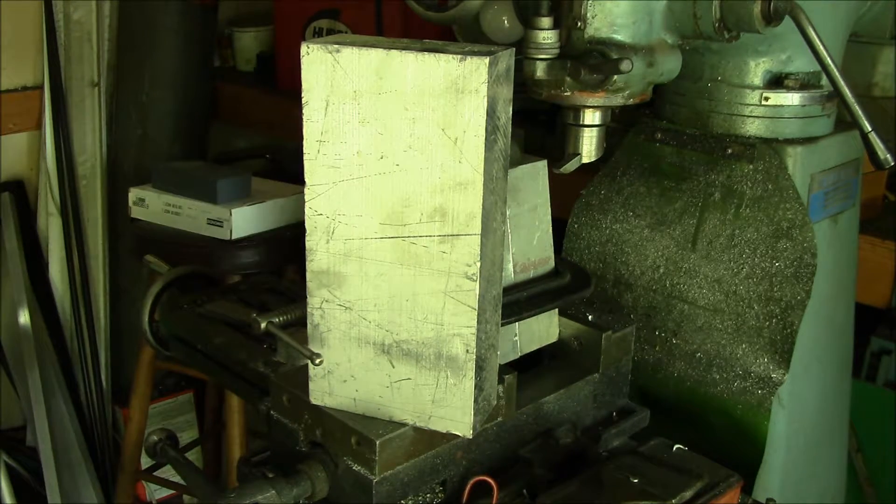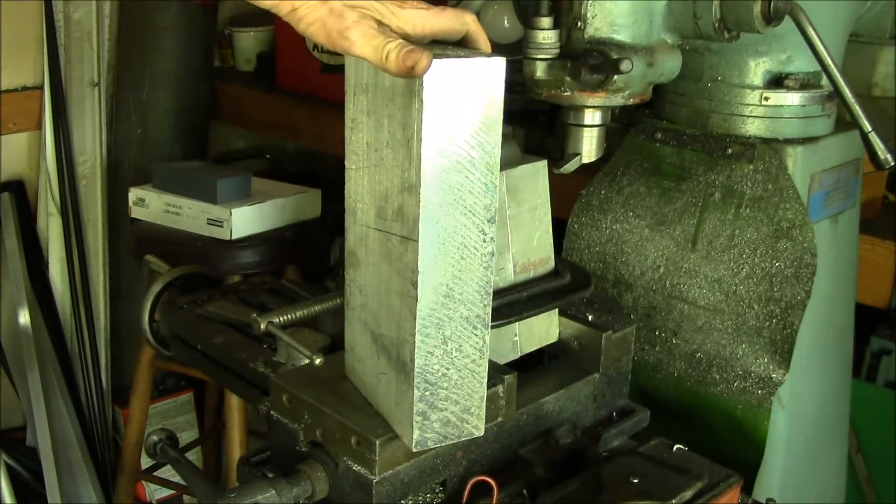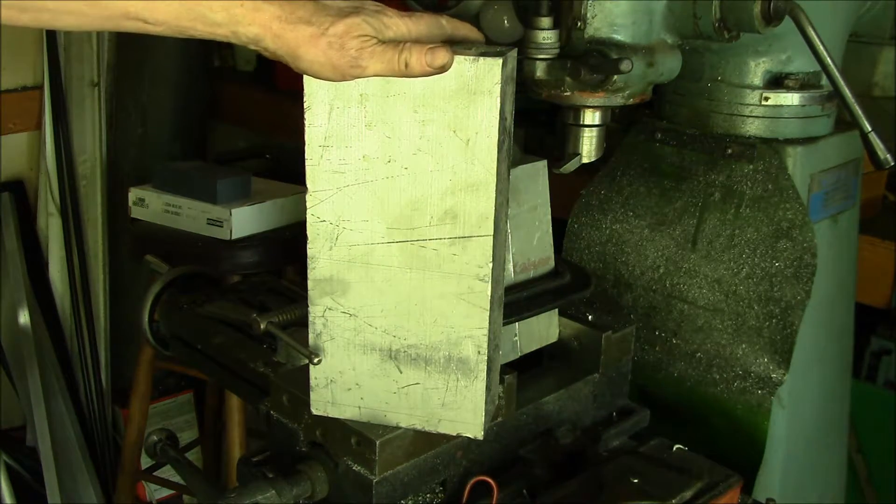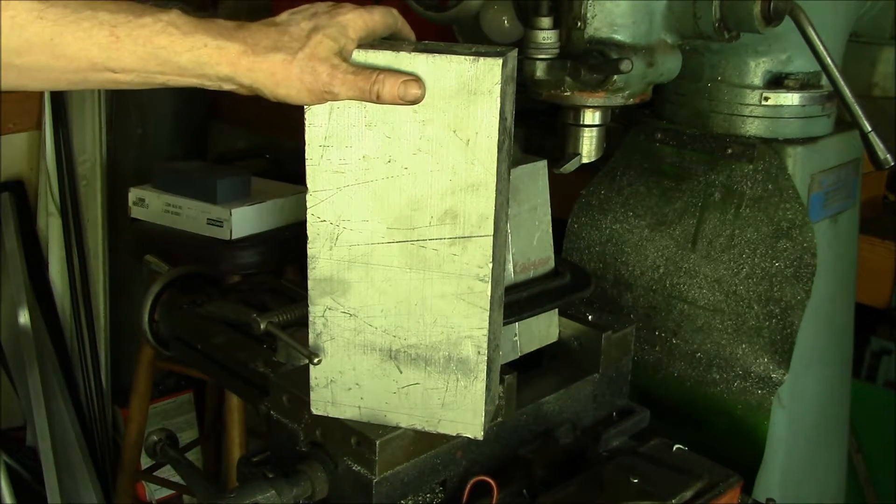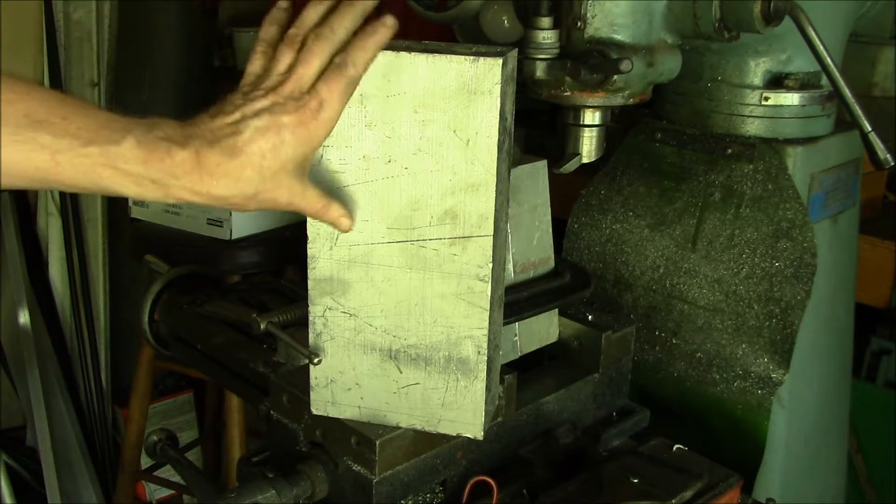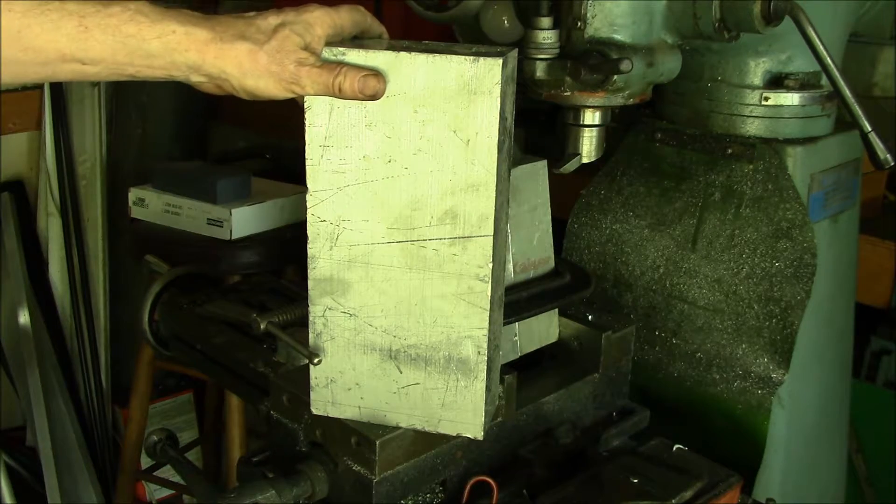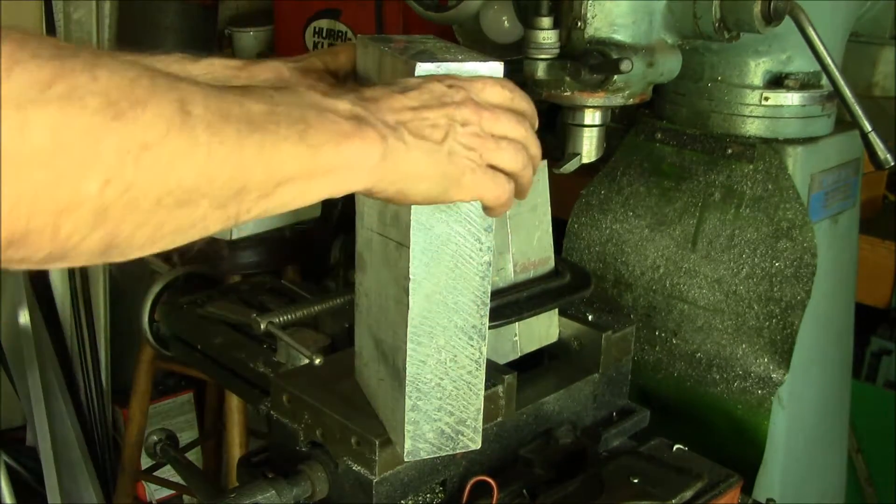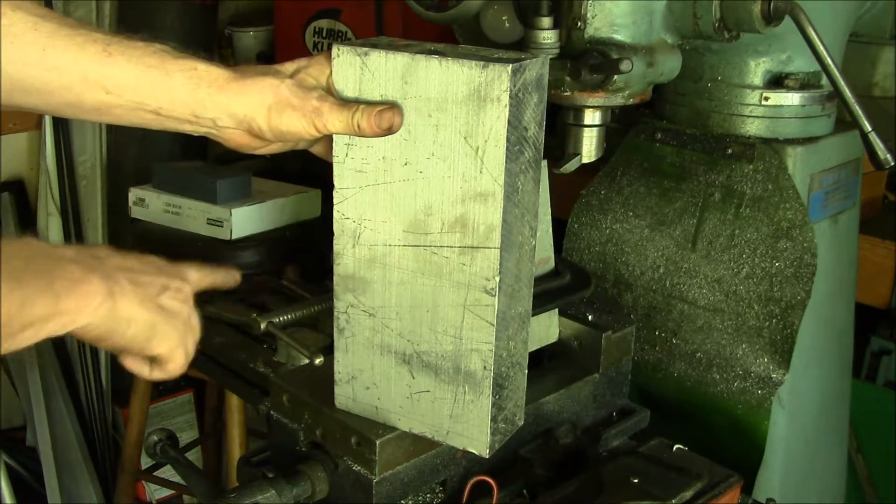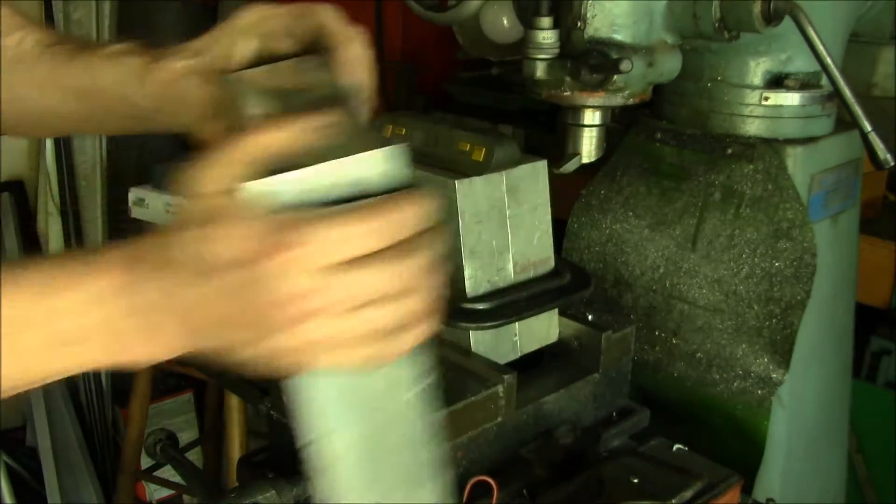I started out earlier today with a big block of aluminum from the metal yard and we cut it at the angle he wants. This one's going to be at 10 and a half degrees. The actual blocks are 8 inches tall, 6 inches long, and 2 and a half inches wide. I saw that angle which gives me two equal pieces.